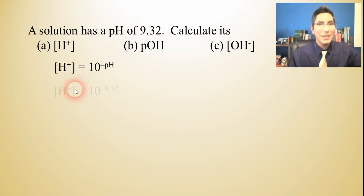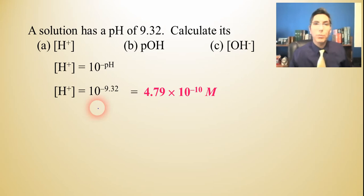So we just have to take 10 to the negative 9.32 and we can key that into our calculator. You probably have a dedicated anti-log button or second log gets you 10 to the x, and you can key that in and find it's 4.79 times 10 to the negative 10th.